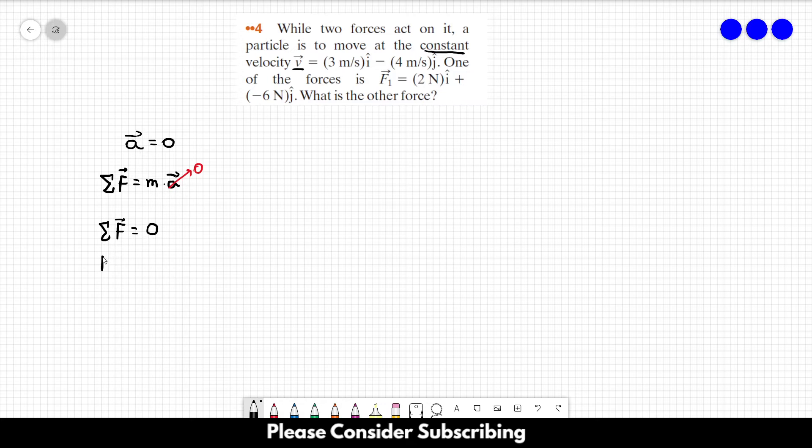And we have only two forces, so F1 plus F2 is equal to zero. That's what we have to do in this exercise. So we know that our F1 is equal to 2 newtons in the I direction minus 6 newtons in the J direction.